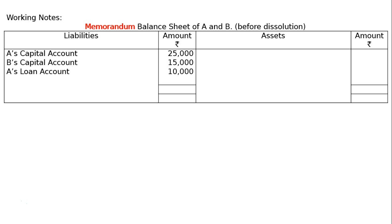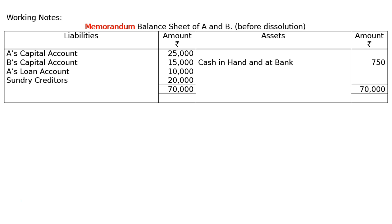Sundry creditors is Rs. 20,000, and the total of the liability side is Rs. 70,000. Cash in hand or at bank is given on the asset side as Rs. 750. We take the liability side total of Rs. 70,000 to the asset side and deduct Rs. 750 to find out sundry assets. This balancing figure is Rs. 69,250.